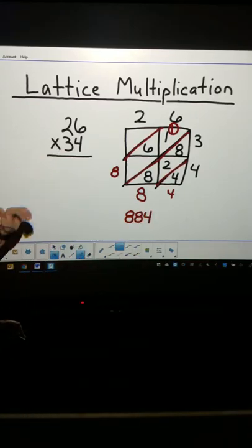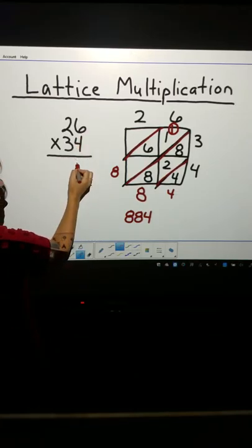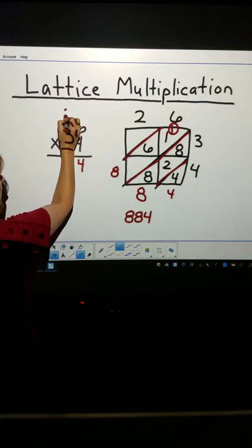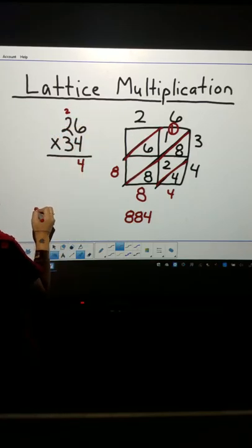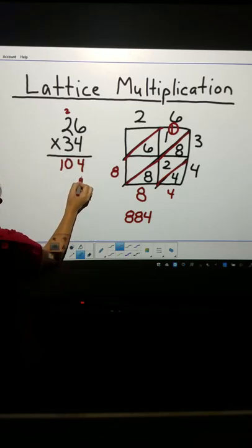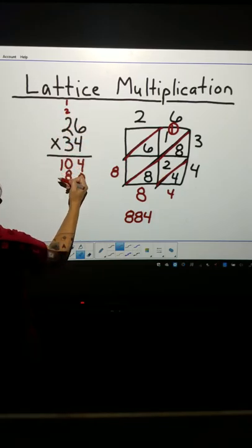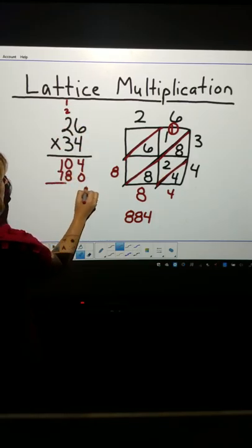Now, if I were to multiply it the old-fashioned way, I should get the same product. 6 times 4, 24. Regroup. 2 times 4 is 8. Plus 2 is 10. Hold a spot. 3 times 6 is 18. Regroup. 2 times 3 is 6. Plus 1 more is 7.